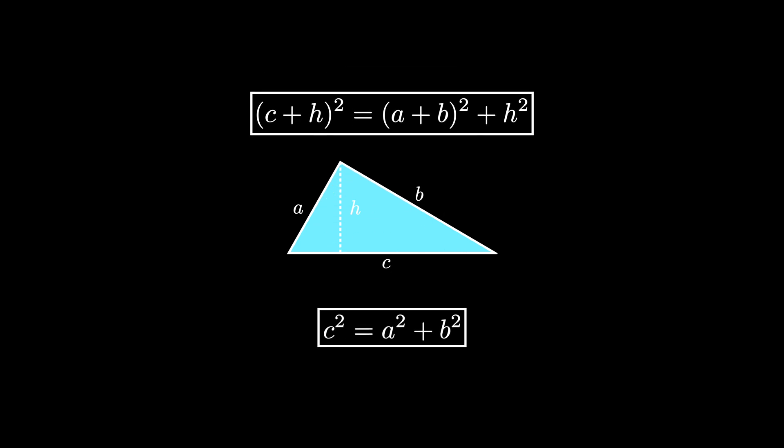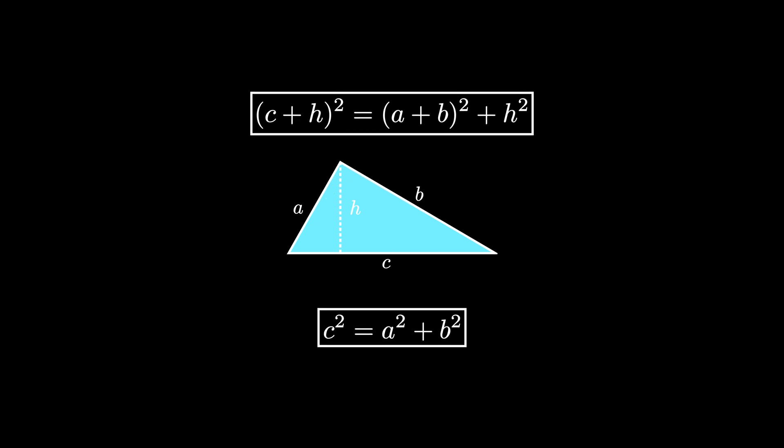It says that the square of the hypotenuse of a right triangle is equal to the sum of the squares of the leg lengths.